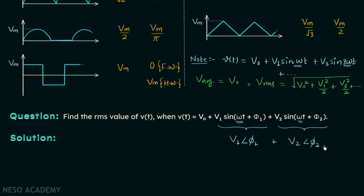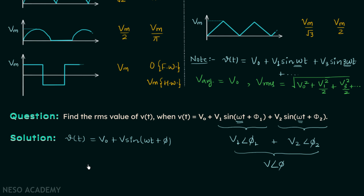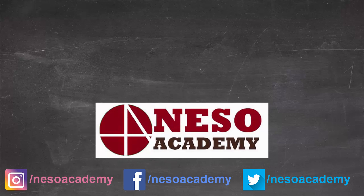Adding the two phasors gives a resultant phasor V at angle φ. We can then write V(t) equal to V0 plus V sin(ωt + φ). Now we are allowed to apply the RMS formula: the RMS voltage equals the square root of V0² plus V²/2. This is the answer to the question.